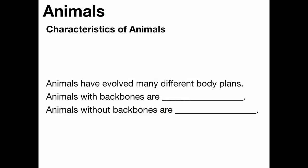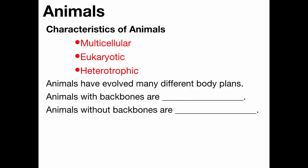You guys already know the three words we use to describe the characteristics of animals. They're eukaryotes, multicellular — they are made of many cells and their cells have a nucleus — and heterotrophs, meaning they obtain their energy by eating other things. Those are the three characteristics of all animals.